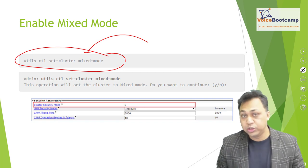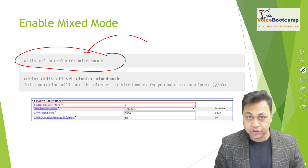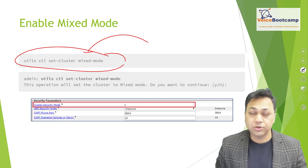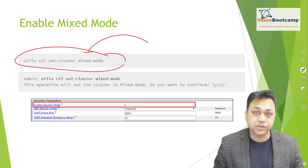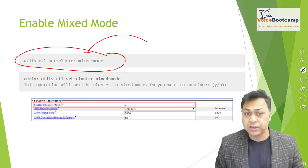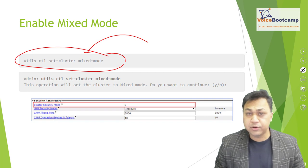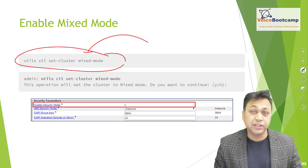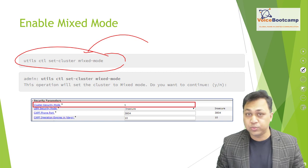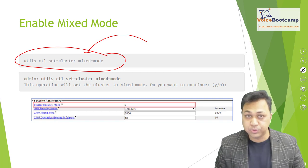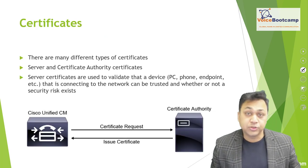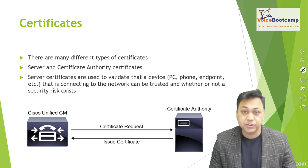Some organizations such as banks, government agencies, or law enforcement may have a restriction where only encrypted traffic is allowed. In that case, you may want to disable the mixed mode concept so that unencrypted traffic is not permitted. Now let's look at the different types of certificates.